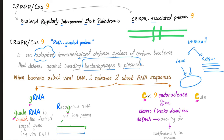And of course, you know, like A with T — but RNA doesn't have T, so A with U, and G with C, and C with G. Classic base pairing. So this is the guide RNA.